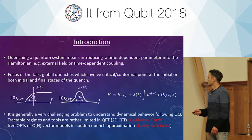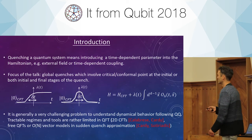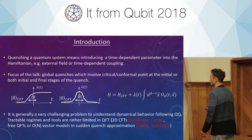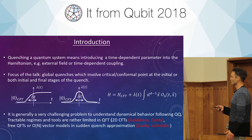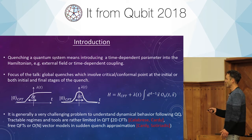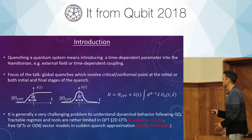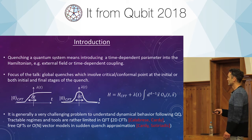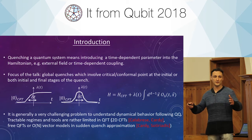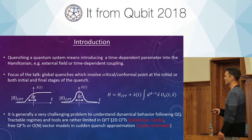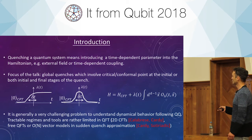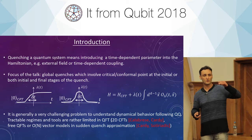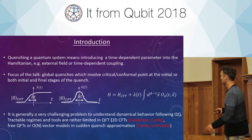Quenching — I guess most of you know what it is — means that we introduce some time-dependent parameter into the system, into the Hamiltonian. It can be an external field or just a time-dependent coupling. For the purpose of this talk, I will focus on global quenches which involve a critical conformal point at the initial state or at both the initial and final states. The system will be prepared in vacuum and then we gradually turn on some coupling, so we have some conformal field theory Hamiltonian and introduce some relevant deformation — relevant because we want to deform our UV CFT slightly, so the deformation will be small at least in the UV limit.